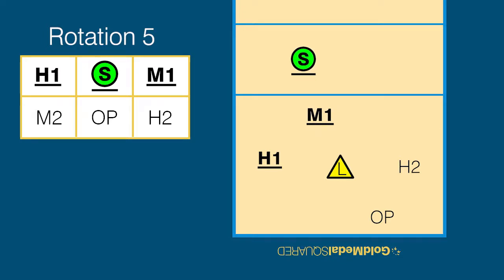The only thing to make sure of here is that the setter remains to the left of the M1, and the setter also needs to stay to the right of the H1 if they start going that way. From here, the middle can easily hit a middle attack or a slide.